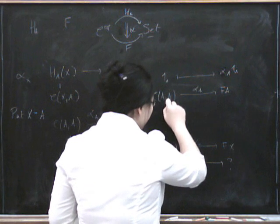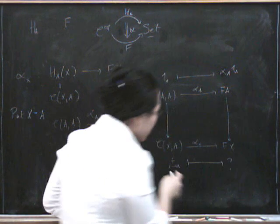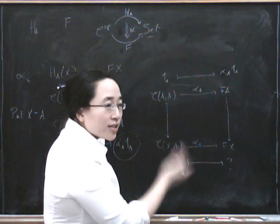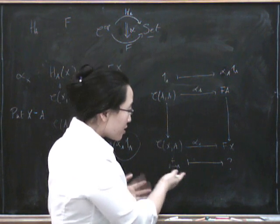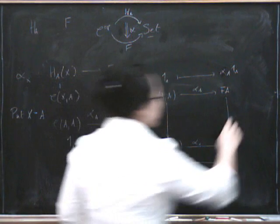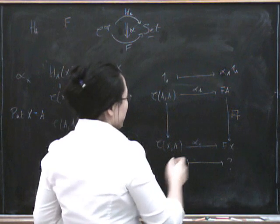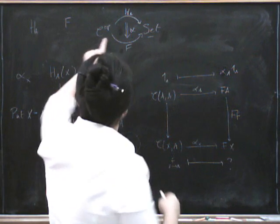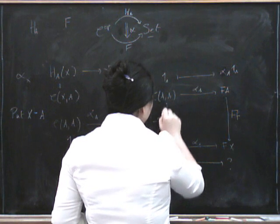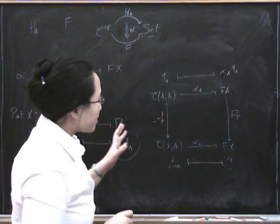So we know where that goes. So now what's this naturality square going to tell us? We have a morphism coming down here and a morphism coming down here. Because we're trying to work out where this f goes. So once we're told which f we're trying to consider, we've got an f, and it goes from x to a. So this f of f is going to go from f of a to f of x, because f is a contravariant functor. And this here is going to be pre-composition with f.